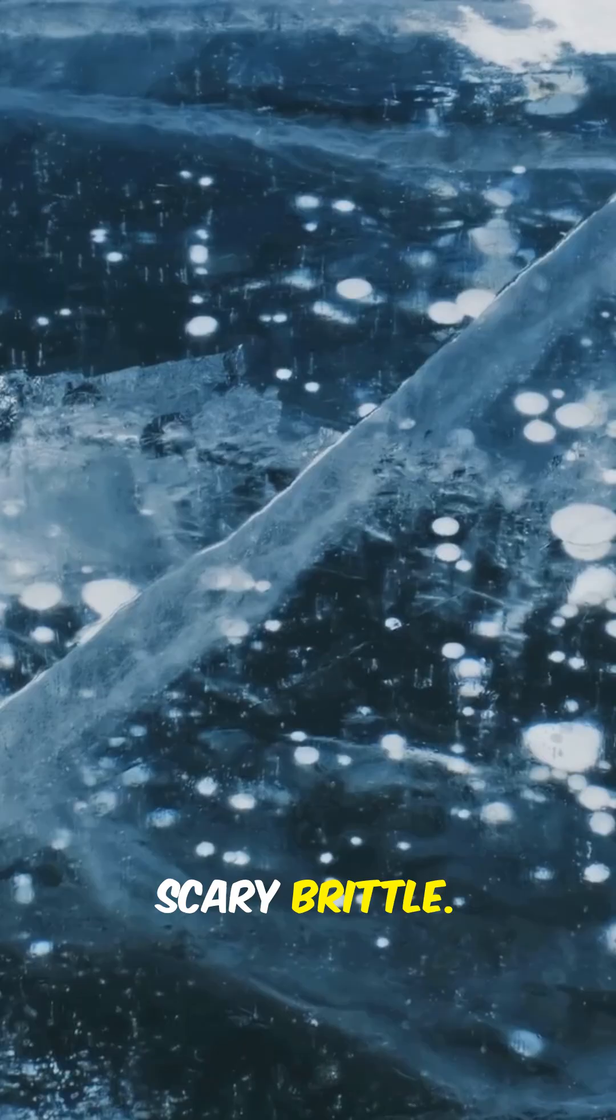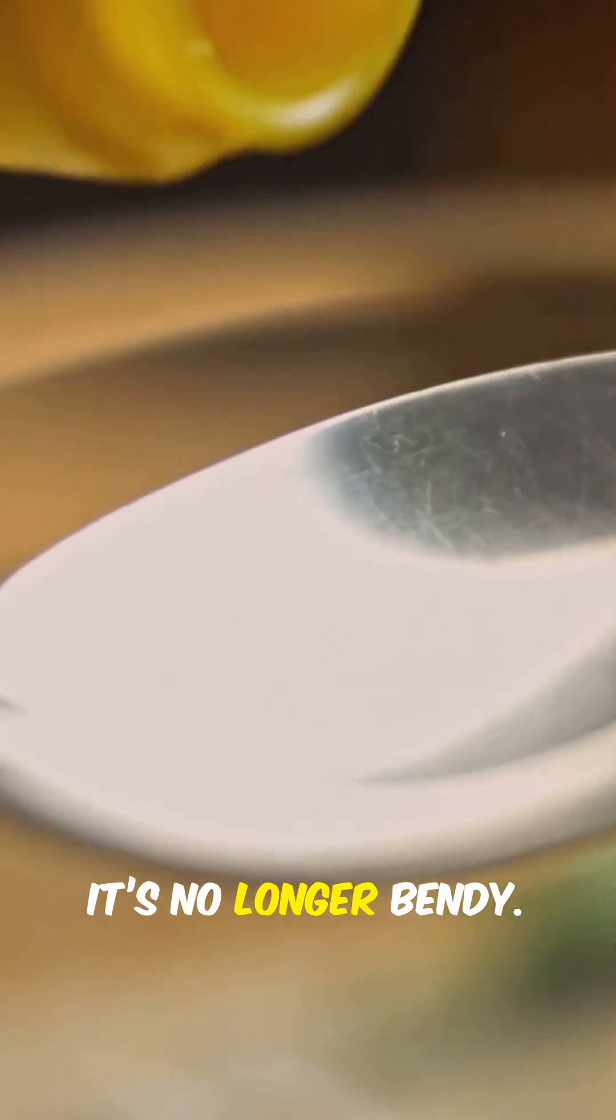Plastics change. They become brittle, like scary brittle. Imagine you have a plastic spoon. At this temperature, it's no longer bendy. Snap it, and it shatters almost like glass.